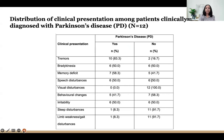Distribution of clinical presentations in Parkinson's disease: about 83 percent of patients presented with tremors, and 50 percent presented with bradykinesia, speech disturbances and irritability.